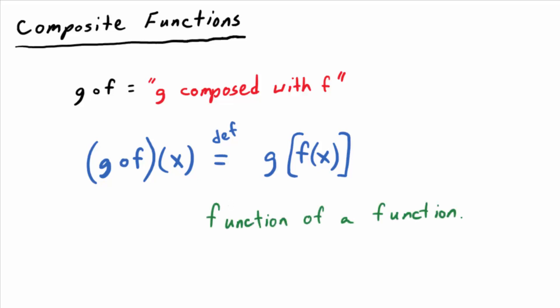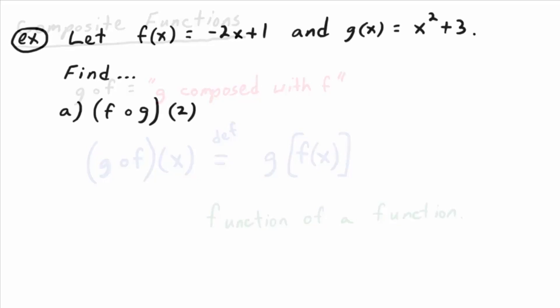It's not as complicated as it sounds, though, if you remember a few simple rules. So let's look at an example. In this example, we're going to let f of x be negative 2x plus 1, and g of x is x squared plus 3. We want to find, part a...